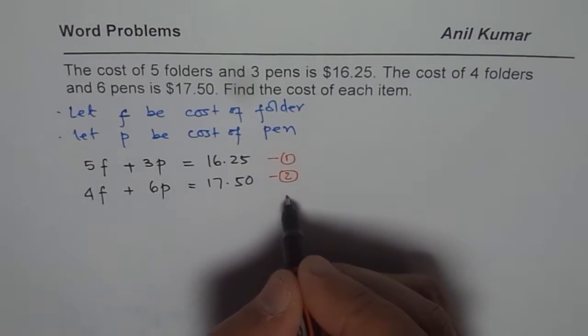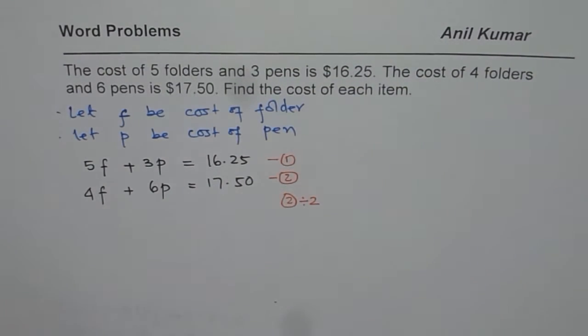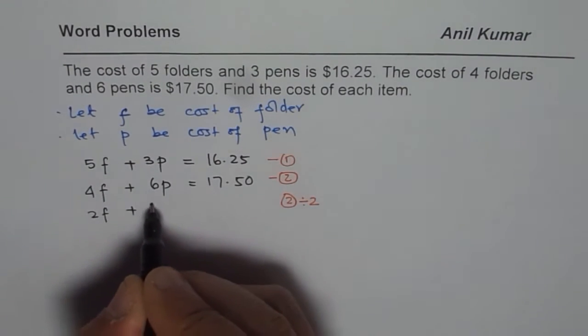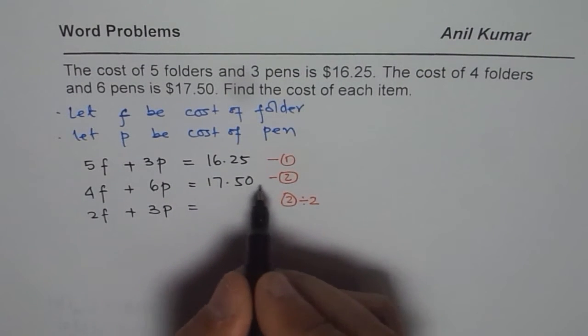So the step which I am doing now is equation 2 is being divided by 2. So I get half of 2, 4 is 2. So we get 2F plus 3P equals 17.5 divided by 2.